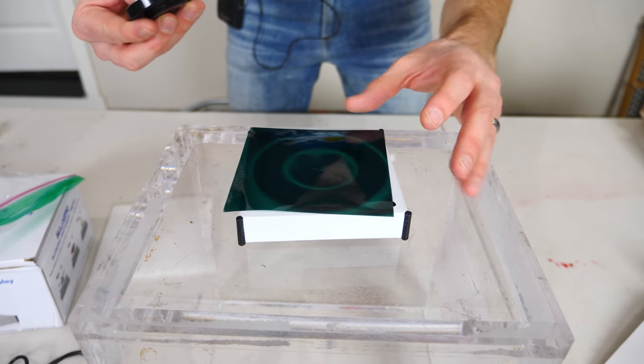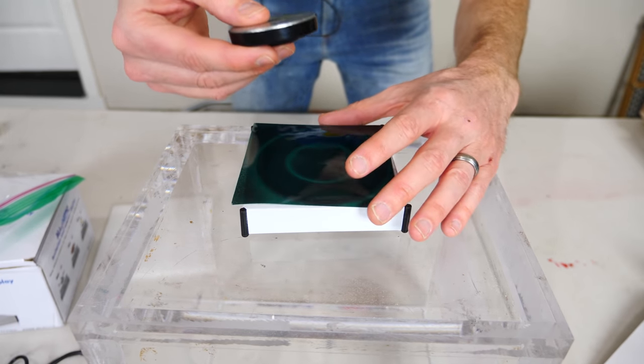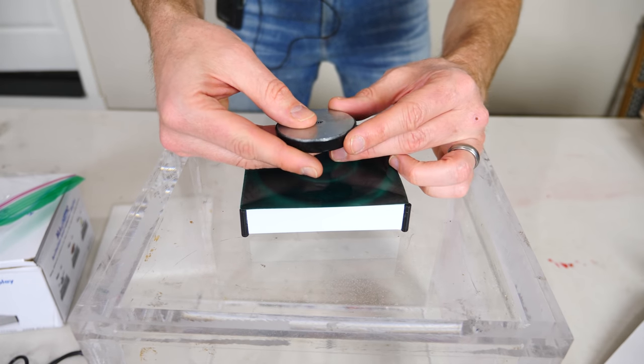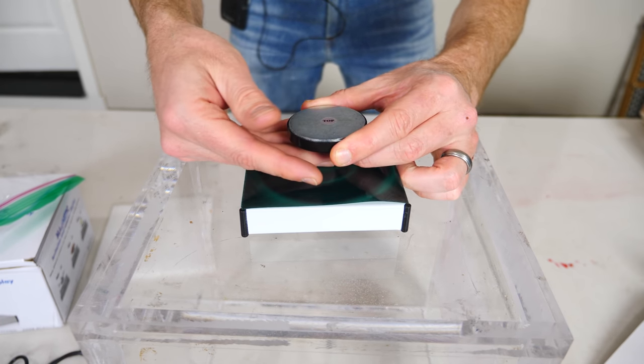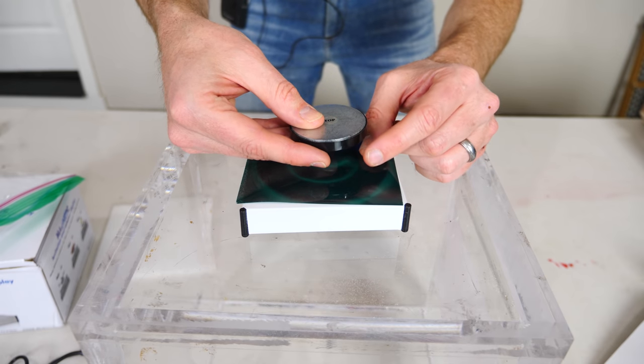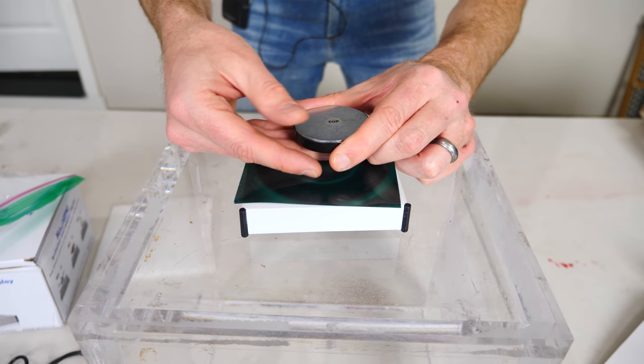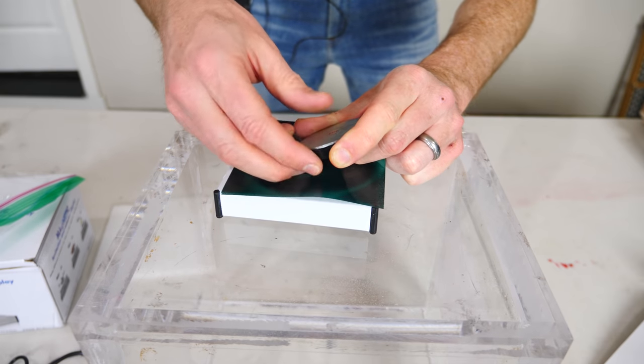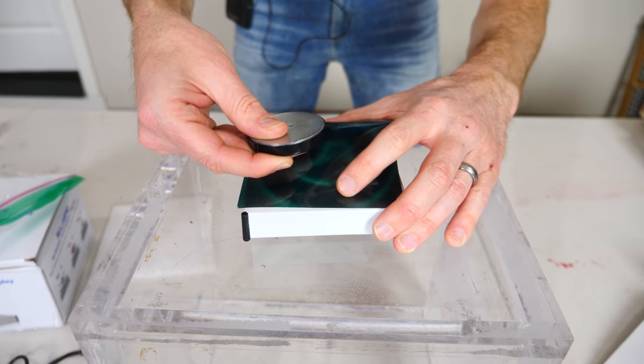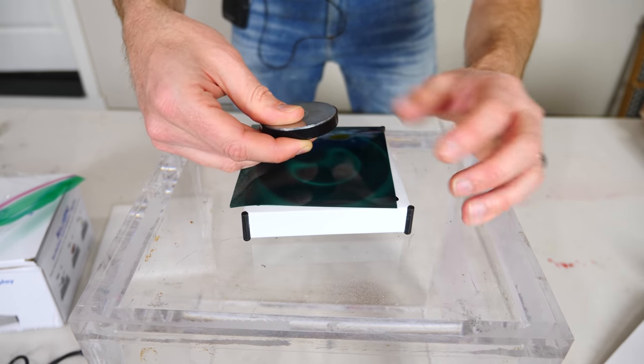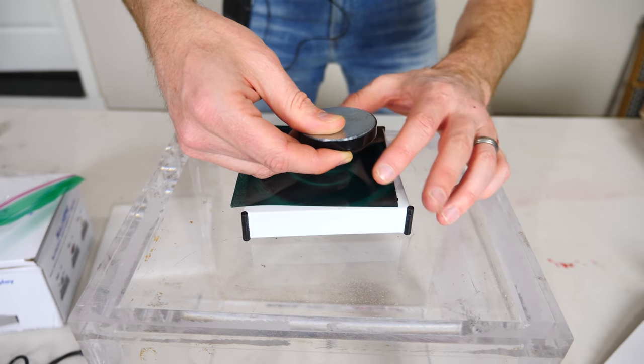So balancing two magnets on top of each other is inherently unstable and you can never get it to work unless you have some feedback. So whenever it tries to start to fall one way, what if I had another magnet that turned on over in this corner and pushed it back the other way, or if it started to fall the other way, I have another magnet that pushes it back the other way.